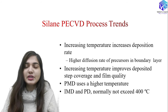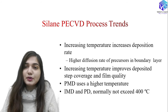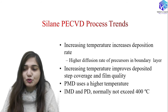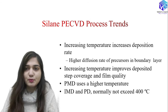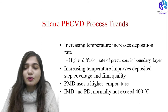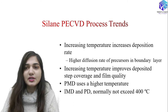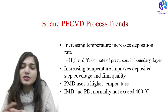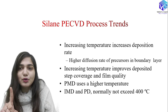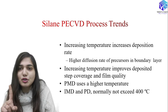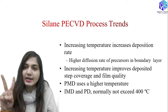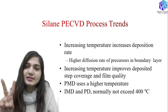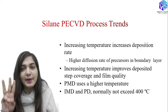If I am going to increase the temperature, at the increased temperature I am going to get a higher deposition rate — this is the first process trend. Second, increasing the temperature gives better step coverage, and third it gives better film quality. These three process trends are associated with higher temperature in the silane PE-CVD process: better deposition rate, better step coverage, and better film quality.